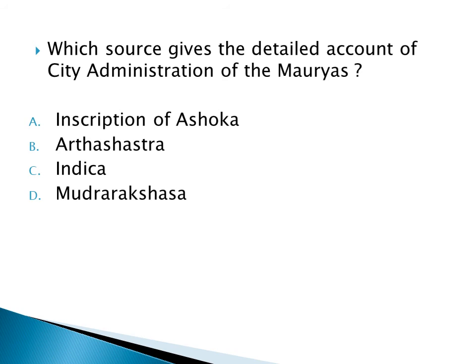Which source gives a detailed account of the city administration of the Mauryans? Option A: Inscriptions of Ashoka, Option B: Arthashastra, Option C: Indica, Option D: Mudra Rakshasa. The right answer is Option C: Indica, which was written by Megasthenes.